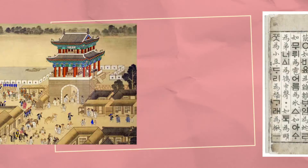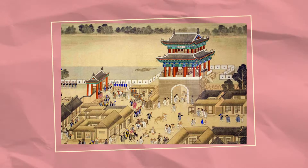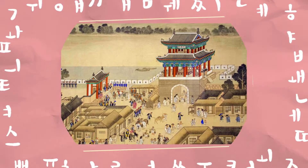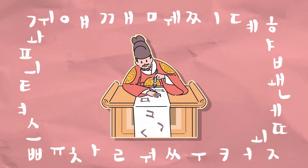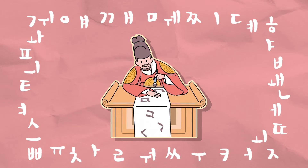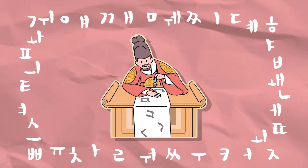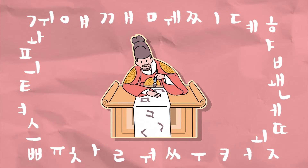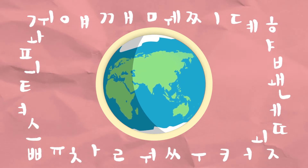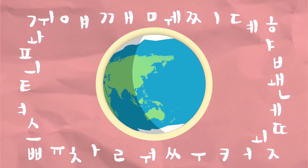But back then, many lower-class Koreans had a hard time learning Chinese letters. So King Sejong created Hangul, so that people with little education could learn to read and write. It's considered as one of the easiest alphabets in the world.